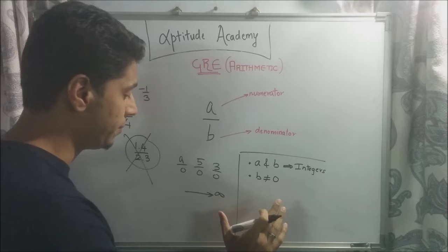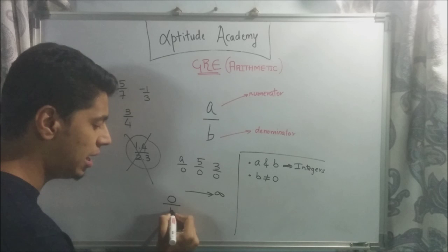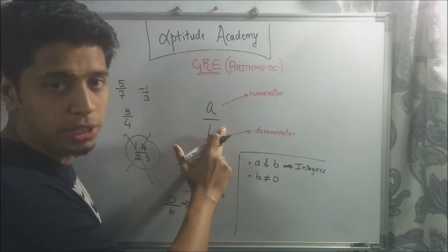You can have A equal to 0. 0 over anything, your result will be 0 anyway, so it's fine. So A can be 0 but B cannot be 0 and both have to be integers.